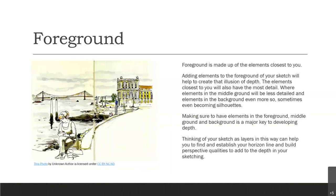Foreground is made up of the elements closest to you. Adding elements in the foreground of your sketch will help create that illusion of depth. The elements closest to you will also have the most detail, where elements in the middle ground will be less detailed, and elements in the background even more so — sometimes even becoming silhouettes. Making sure to have elements in the foreground, middle ground, and background is a major key to developing depth. Thinking of your sketch as layers can help you find and establish your horizon line and build perspective qualities.